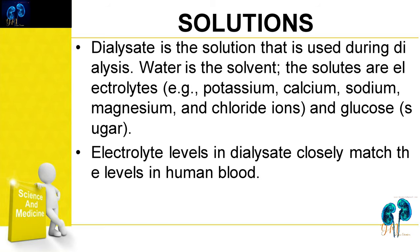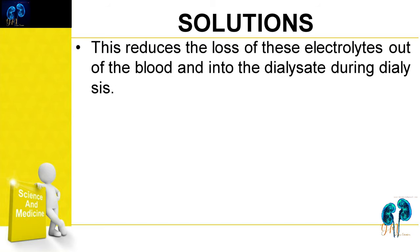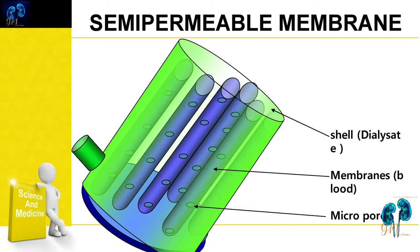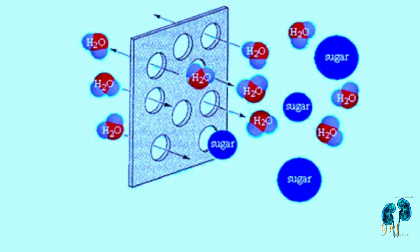Electrolyte levels in dialysate are closely matched to the levels in human blood. This reduces the loss of electrolytes out of the blood and into the dialysate during dialysis. A semi-permeable membrane is a type of thin, flexible filter or barrier that allows only particles smaller than a certain size to pass through it.